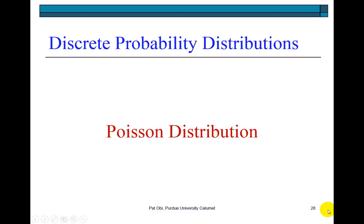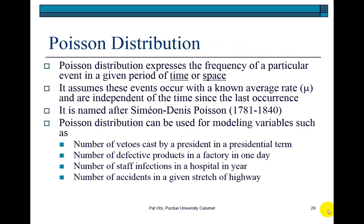This presentation on Poisson distribution shows examples of how to calculate Poisson probabilities. Poisson distribution, like the binomial distribution, is a discrete probability distribution and therefore describes the behavior of a variable that has countable or integer outcomes. Poisson distribution expresses the frequency of a particular event in a given time or space, so it is bounded by time or space.